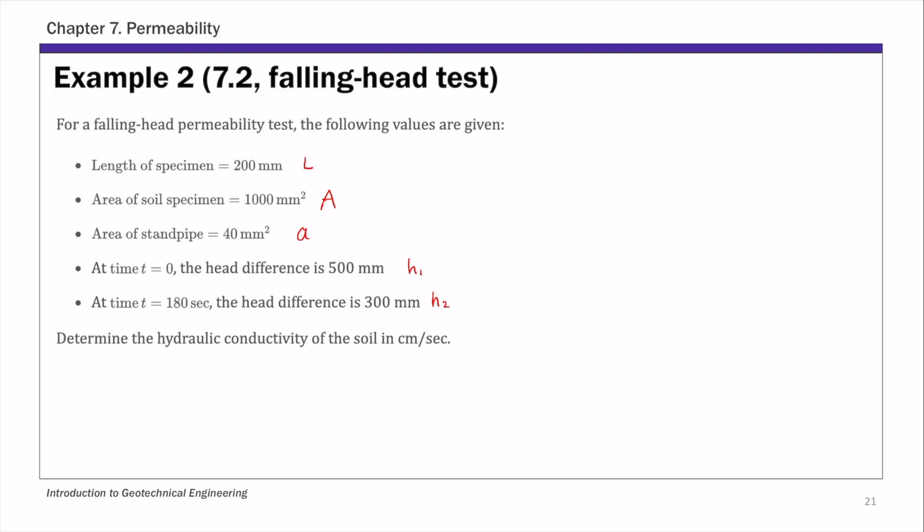And then we are asked to determine the permeability or hydraulic conductivity of soil in centimeter per second. So for this example, we can directly substitute these values into the expression for K. In the lecture, we have shown that for falling head test,